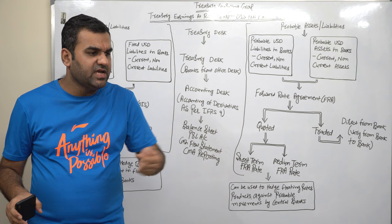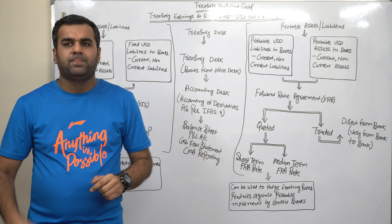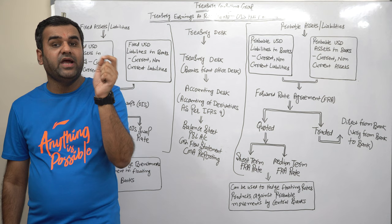Now, every organization is having two set of assets. You call this Reliance, Amazon, Exxon, Saudi Aramco, Google, Microsoft, TCS, Infy, you call this any company, treasury consulting, any company.